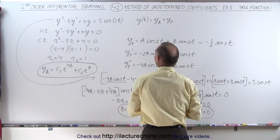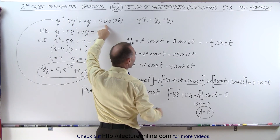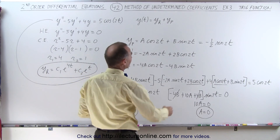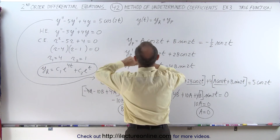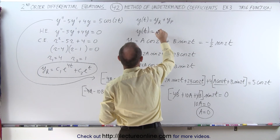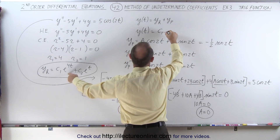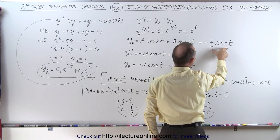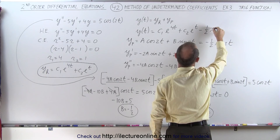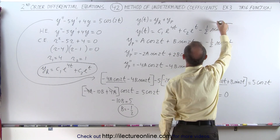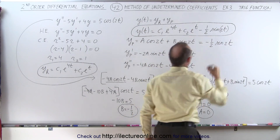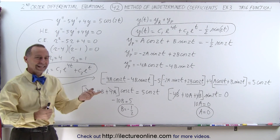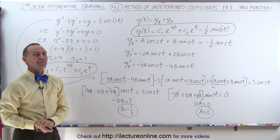It's interesting to note that even though we had a cosine function in the original differential equation, the particular solution turns out to be a sine function. Now that we have both parts, the complete solution is y equals c1·e^(4t) plus c2·e^t minus 1/2·sin(2t). That is the complete solution of the non-homogeneous differential equation, showing another example of determining undetermined coefficients when there is a trigonometric function on the right side.